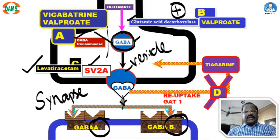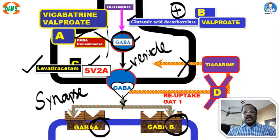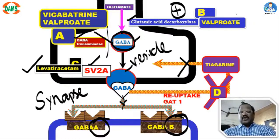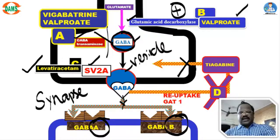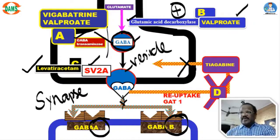The drug acting on letter D is Tiagabine — the reuptake of GABA is blocked by Tiagabine. Tiagabine is a GABA analogue acting by inhibiting reuptake of GABA. In summary, four important points: sodium valproate promotes synthesis of GABA by activating glutamic acid decarboxylase; sodium valproate and vigabatrin inhibit GABA-transaminase; synaptic release of GABA is modified by levetiracetam; and GABA reuptake is blocked by tiagabine.